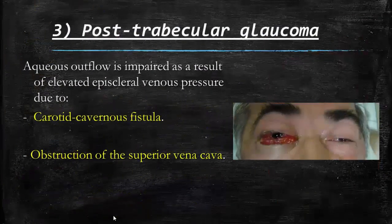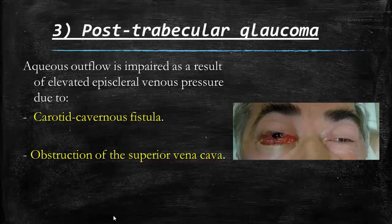Post-trabecular glaucoma: here the aqueous outflow is impaired as a result of elevated episcleral venous pressure, which means the obstruction occurs at the level of venous drainage of the aqueous, after the trabecular meshwork, like carotid cavernous fistula and obstruction of the superior vena cava — as shown in this photo of a man with carotid cavernous fistula.